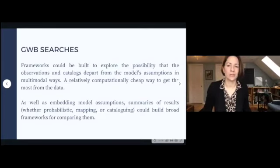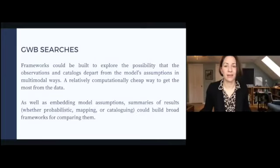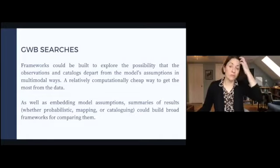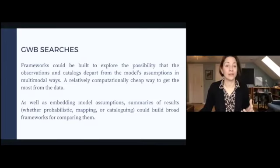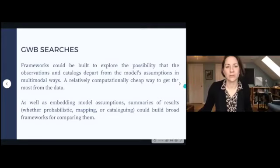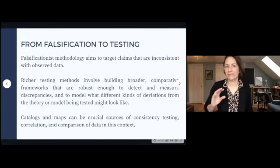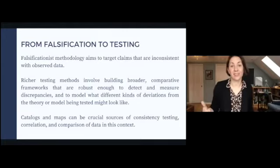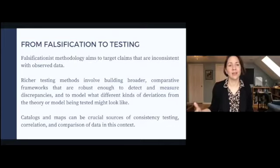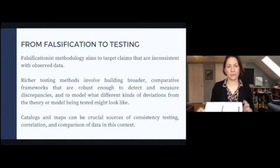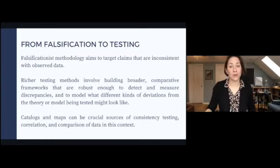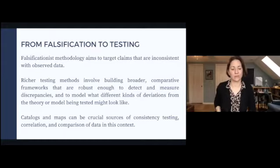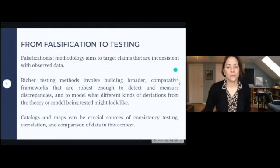This is a relatively computationally cheap way to get the most from the data and from observations already made. As well as embedding model assumptions, summaries of results could build broad frameworks for comparing different models or different ways that models might depart from each other. In closing, the naive falsificationist methodology aims to target claims inconsistent with observed data, whereas richer testing methods involve building broader comparative frameworks robust enough to detect and measure discrepancies and model what different kinds of deviation from the theory might look like. Catalogs and maps that already exist can be crucial sources of consistency testing, correlation, and comparison.